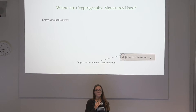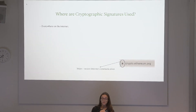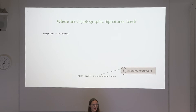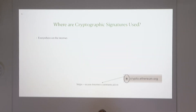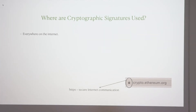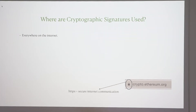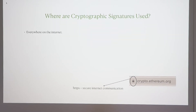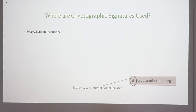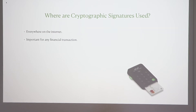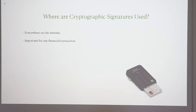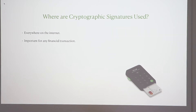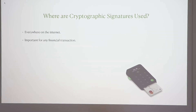Where do we use these things in the real world on the internet? The answer is everywhere. Anytime you connect to any secure website you will be using HTTPS, which is a secure internet communication protocol that amongst other things uses digital signatures to say that the person you're speaking to is who you think they are. This is especially important for financial transactions, and banks have been using cryptographic signatures for a very long time, especially for chip and pin or anything over the internet.